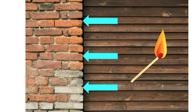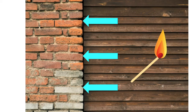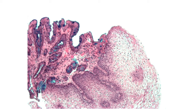Metaplasia typically occurs because one cell type is sensitive to a particular stress and is repeatedly exposed to it, so it gets replaced by a cell better able to withstand that new stress. It is not a change in the phenotype of an already differentiated cell — the analogy here is that a wood fence doesn't turn into a brick fence, but instead of continuing to make wood pieces that are sensitive to fire, the body starts making brick cells that better handle heat. However, there's always a trade-off — brick may not be as flexible as wood.